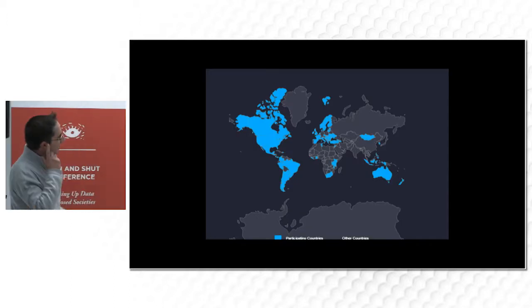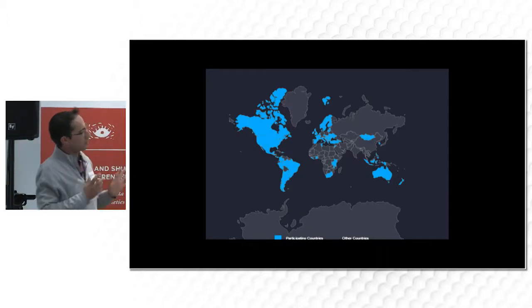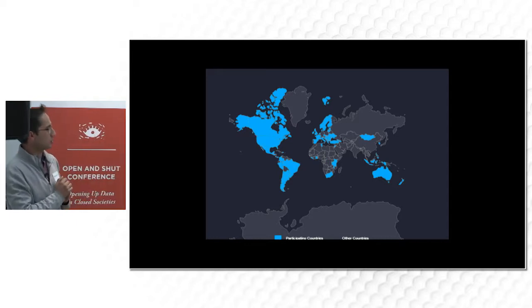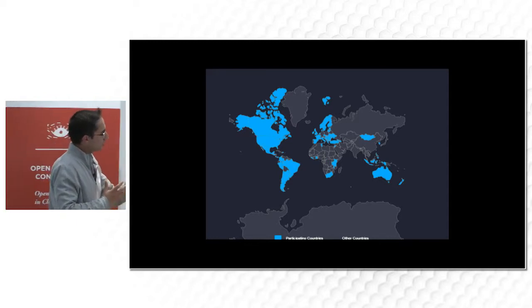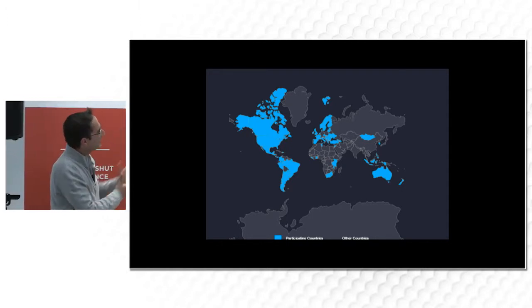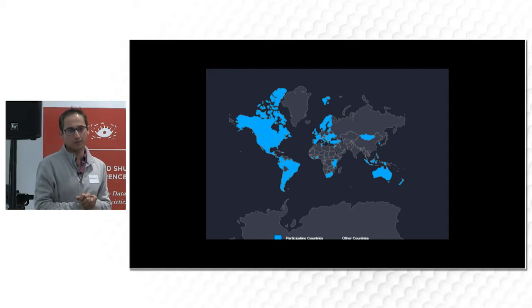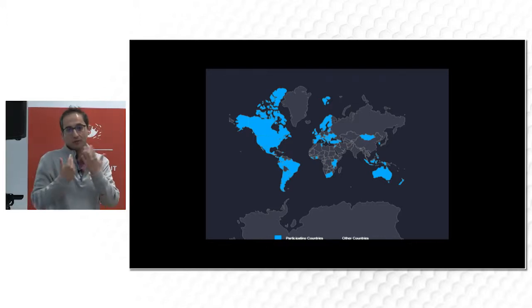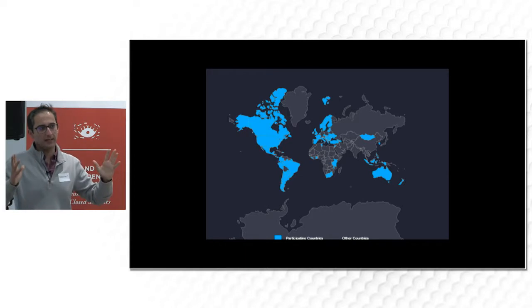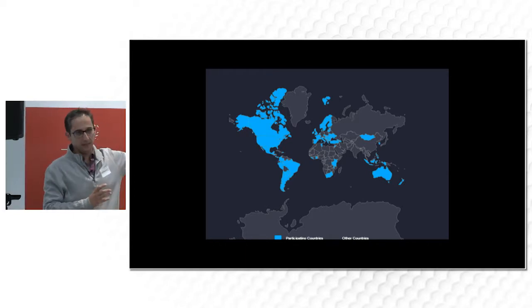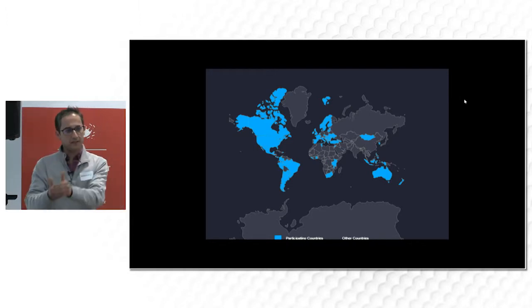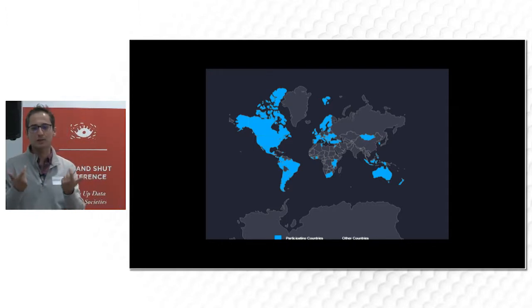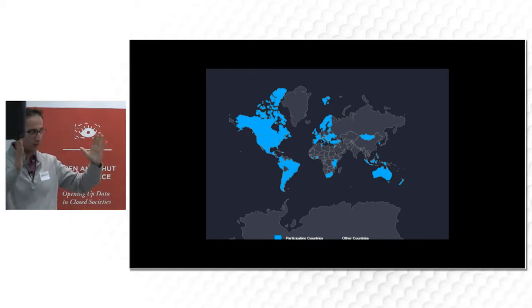So looking at this map: the blue countries are eligible and are participating members of the Open Government Partnership. The countries shown in black are not eligible to be part of the Open Government Partnership. My suggestion is that when we talk about closed society in the context of open data, that's what we mean — countries who are currently not eligible to be part of OGP. Whether that definition works or not is a conversation we need to have around what we mean by closed society in the context of open data.